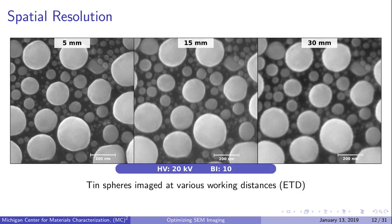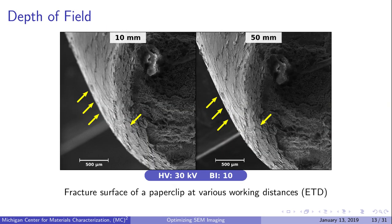Here's a series of images of tin spheres that show spatial resolution decreasing as we increase working distance. The image becomes slightly blurrier at larger working distances, and this decrease in resolution is most noticeable at high magnification. Here's an example of depth of field changing with working distance. At a low working distance of 10 millimeters, we have a shallow depth of field—the edge of the fracture surface is in focus, but the smooth side of the paper clip is out of focus. When we increase the working distance to 50 millimeters, the fracture surface and smooth side of the paper clip are both in focus.